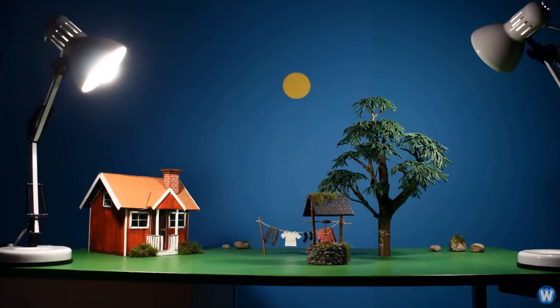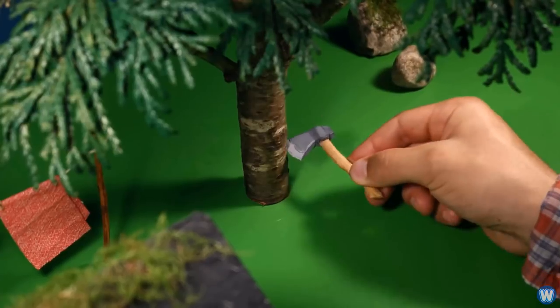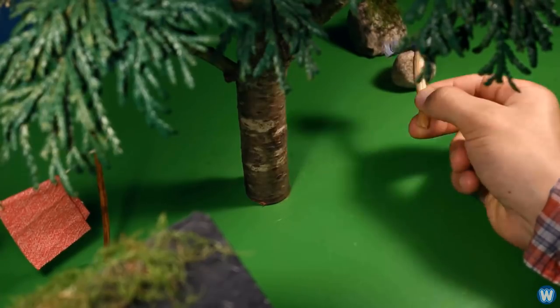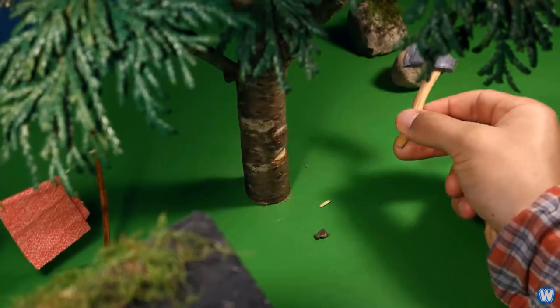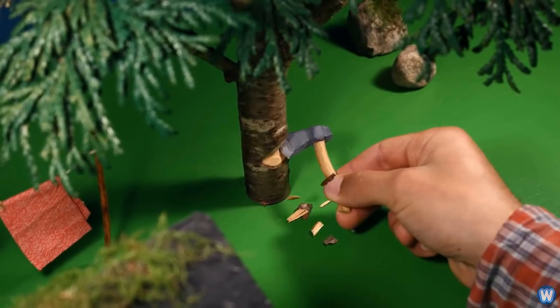Stop-motion is an animation technique that makes objects look as if they move on their own. The objects are moved a little between individually photographed frames, and when played back in a fast sequence, create the illusion of movement.